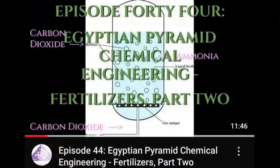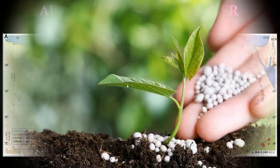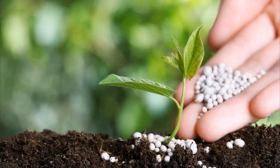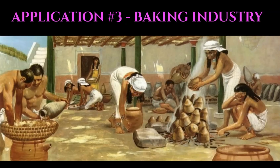And in episode 44, additional applications for ammonium bicarbonate were presented, including as a leavening agent in the baking industry, in the manufacturing of pharmaceuticals and cosmetics, in the production of ceramics and plasters, and processing leather. So we have a compound that can not only be used as fertilizer — specifically in this case a solid compound fertilizer — which, as opposed to aqueous ammonia, can be easily stored, transported, and applied to crops. And also versatile in other industries like creating ceramics and plasters, and the baking industry. But ammonium bicarbonate has two other applications that are directly related to the topic at hand here on the channel: ancient industrial scale chemistry.